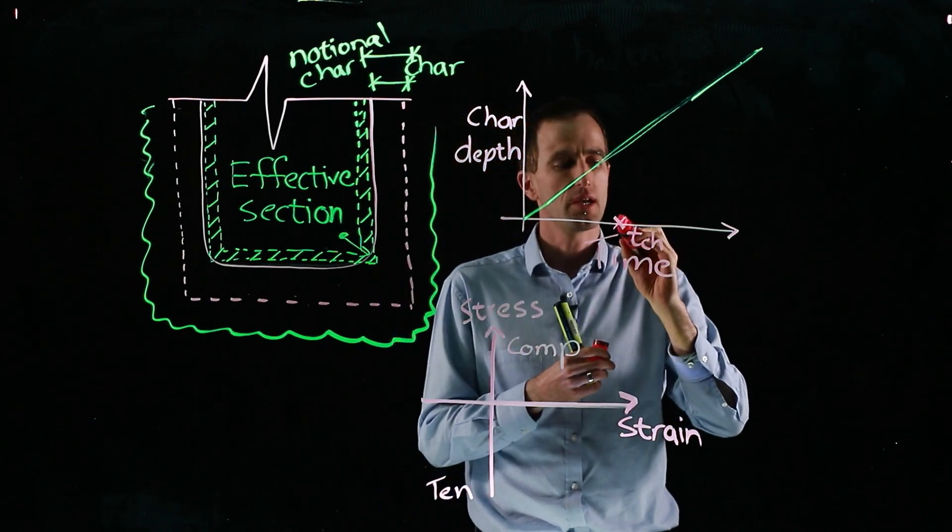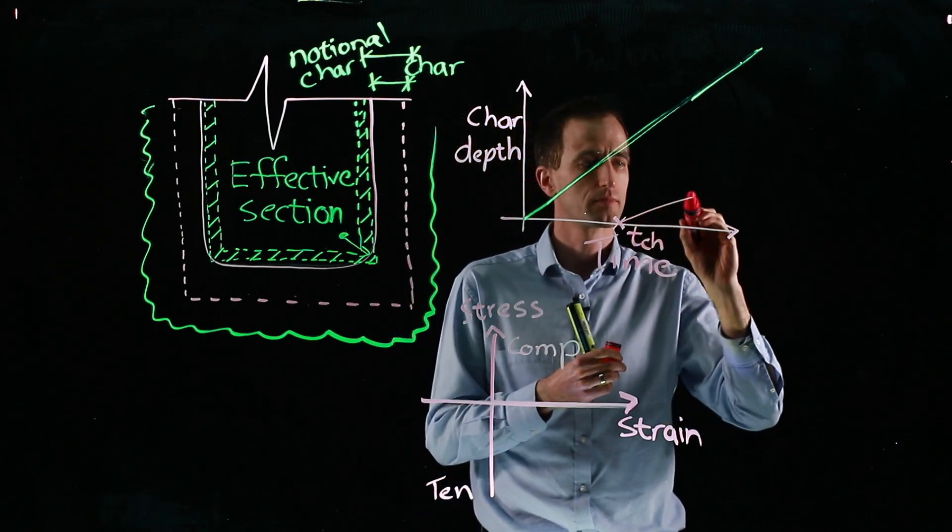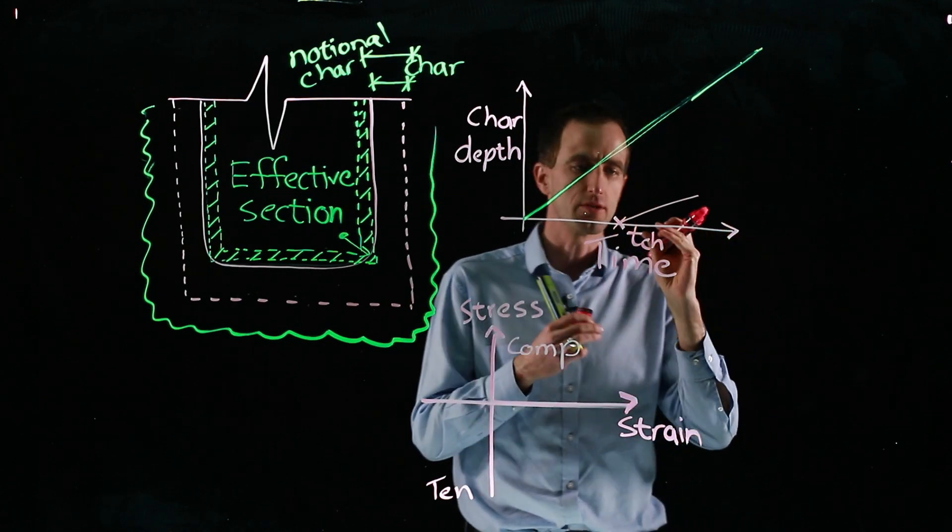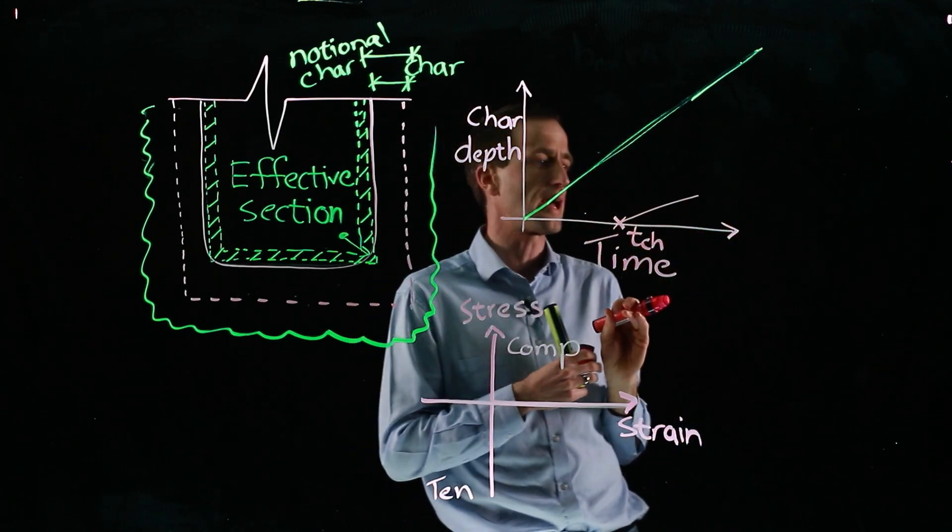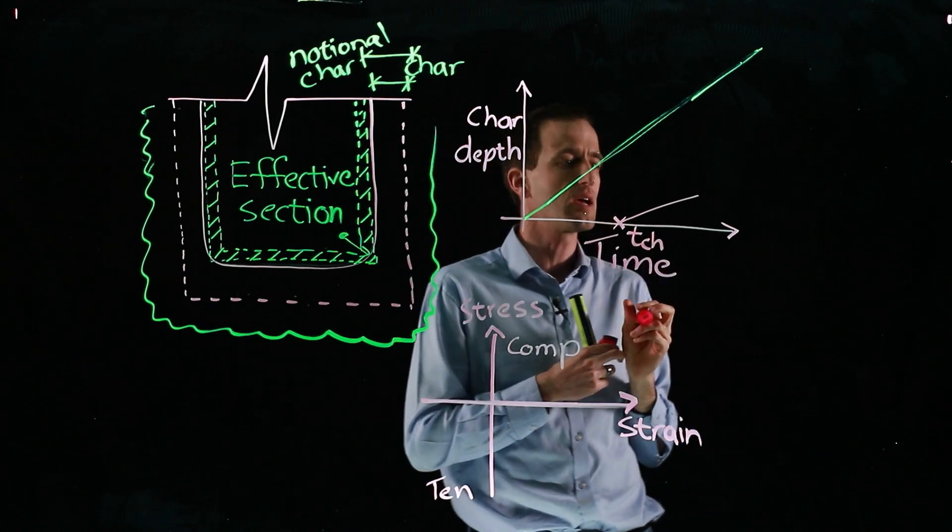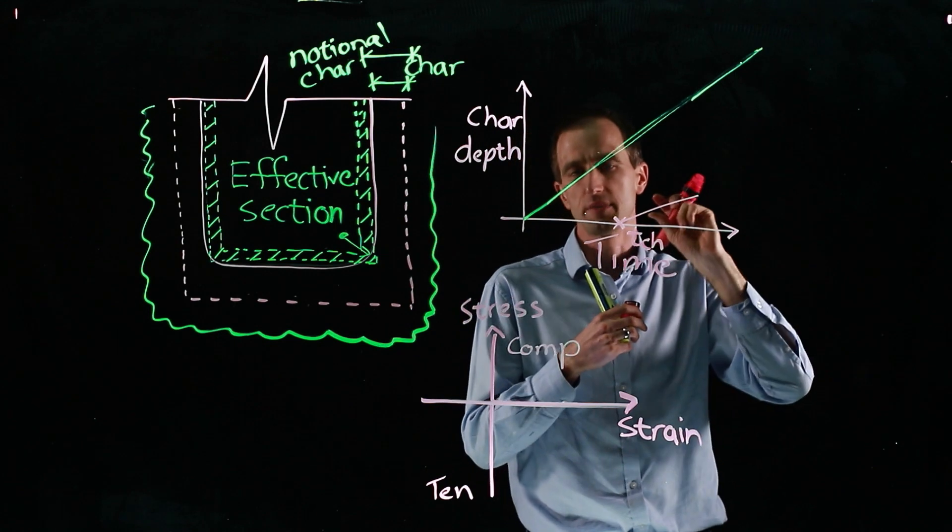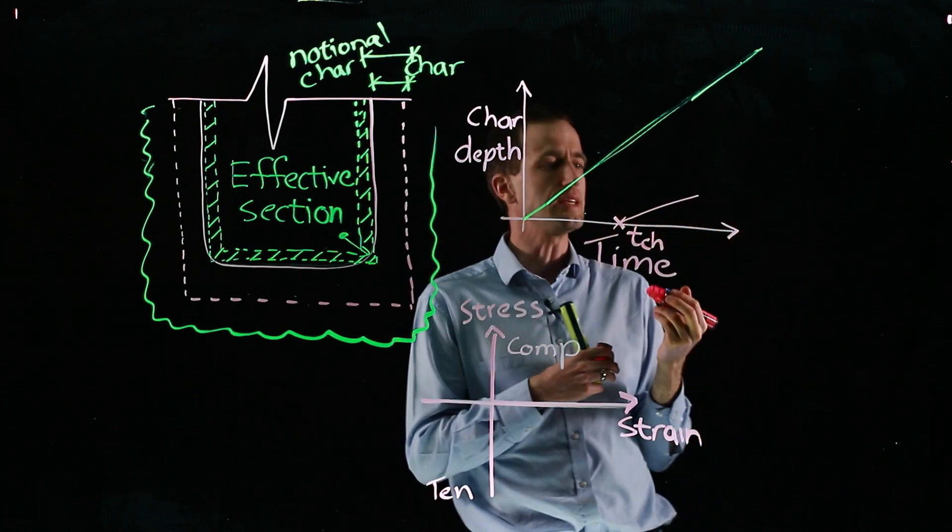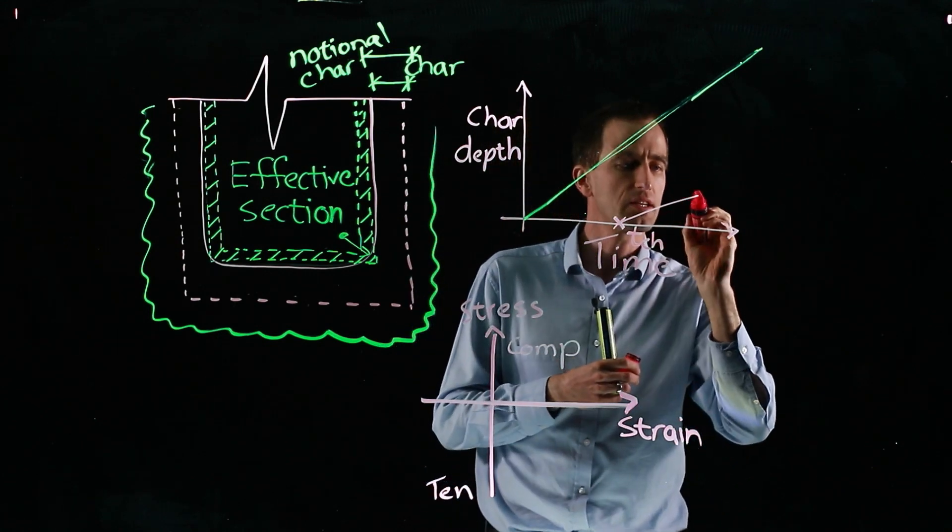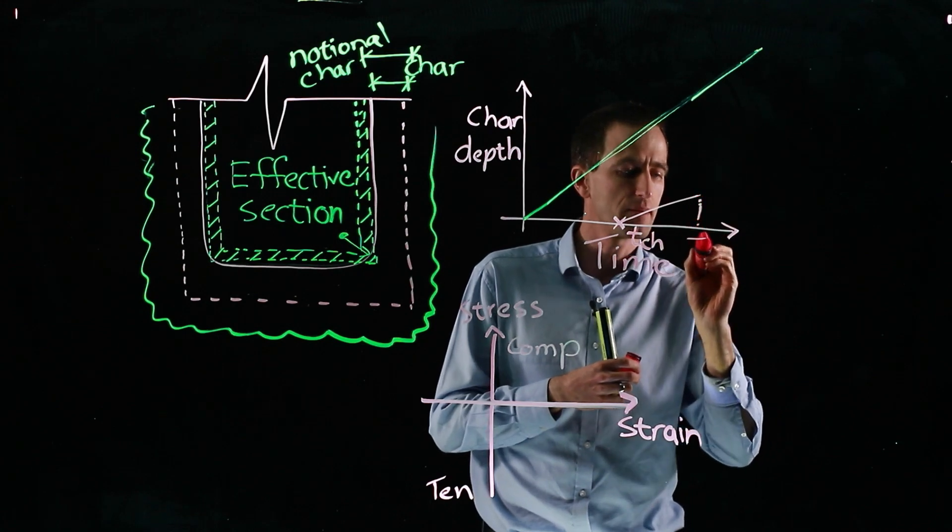And then for a period, the charring progresses at a slower rate because the passive protection, this boarding on the outside is keeping our timber safe. But at this time, the material ahead of the board is heating up. So when this finally fails, we have a time of failure, the charring rate rapidly increases.